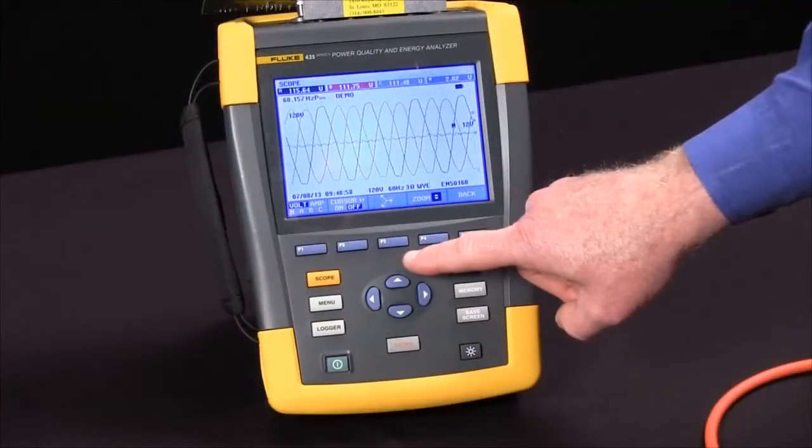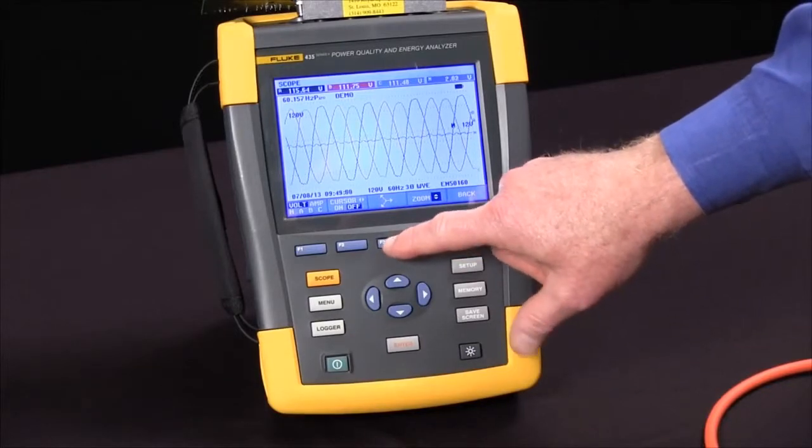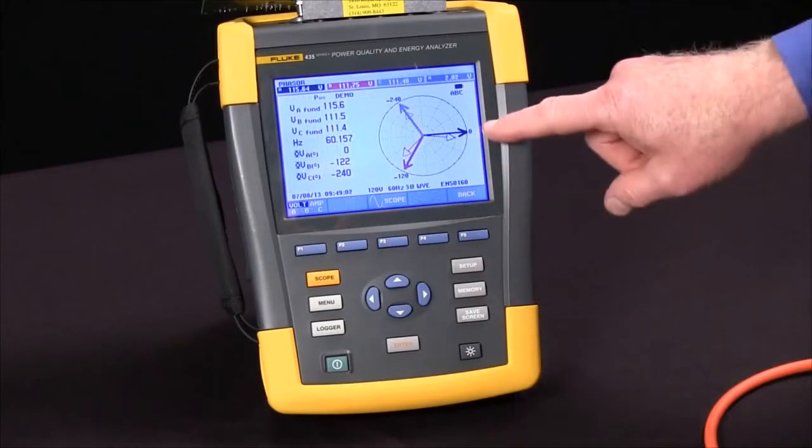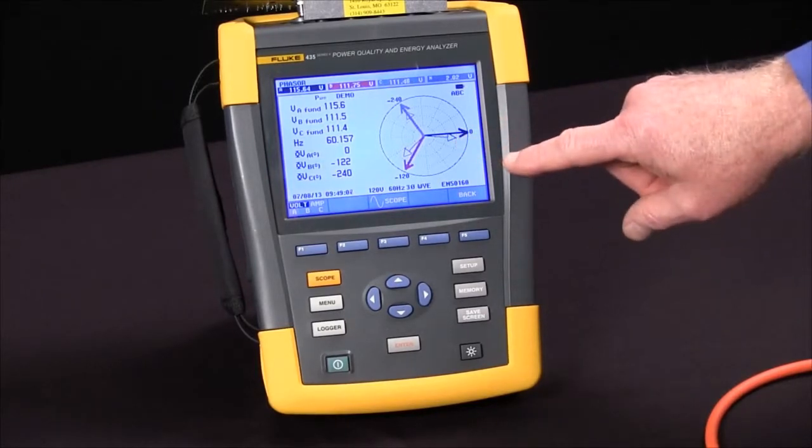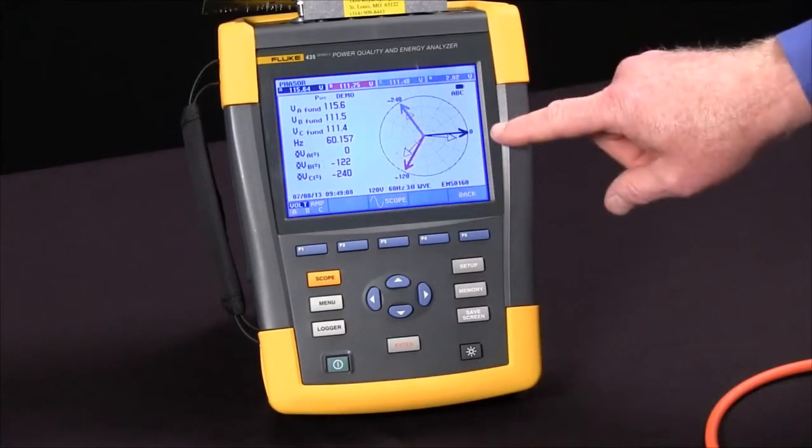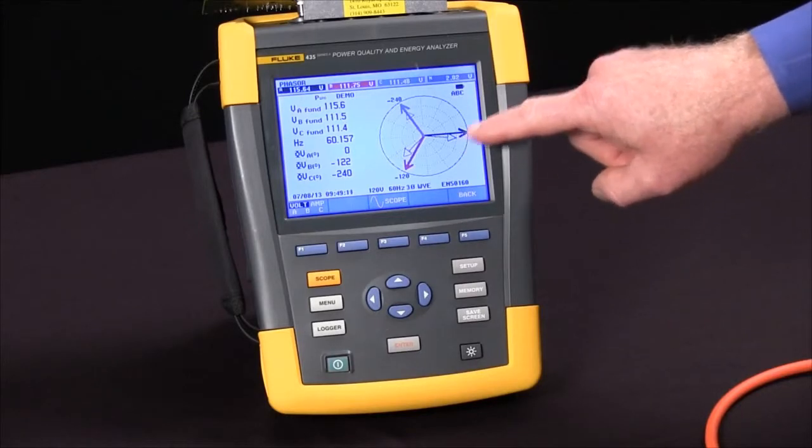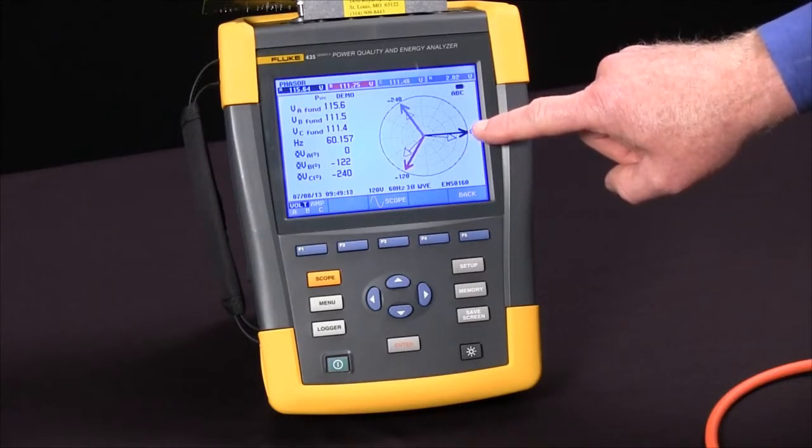If we use the F3 key to pick up phase review, we'll see some bold vectors for our voltage and some lighter vectors for our current. If things are properly connected, we should see those vectors being close to in phase with each other.